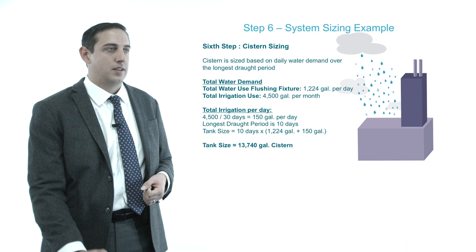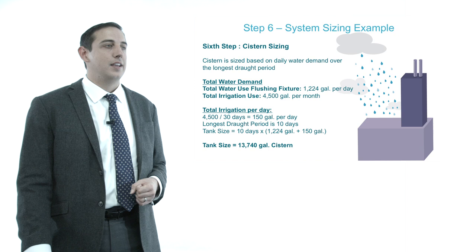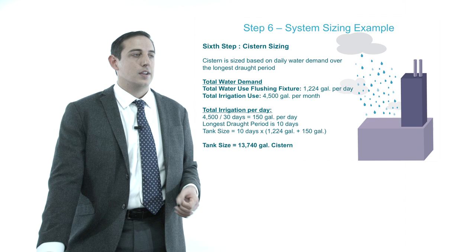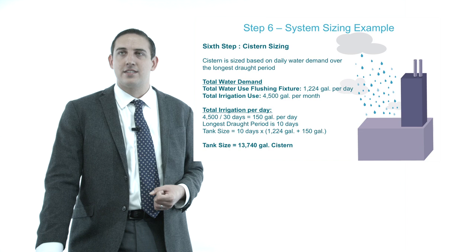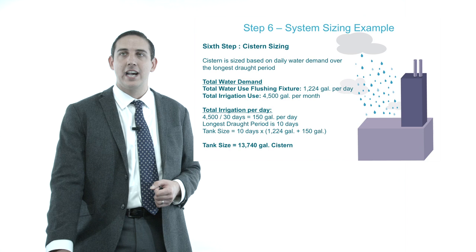Looking at my cistern sizing, I'm going to size it based on my longest drought period, which in this area is about 10 days. With flushing fixtures at 1,224 gallons per day and irrigation at 4,500 gallons per month — dividing that out, I need about 150 gallons per day for irrigation. Adding that to 1,224 gallons × 10 days, I need about a 13,740 gallon cistern. This makes sense — I'm going to get about four precipitation events per month at about 15,000 gallons to fill up my 45,000 gallons of collectible rainwater use.